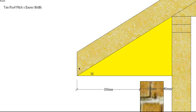because this is a brick veneer example we need to add 110mm for our brick and 40mm for our cavity. So that'll give us a total of 450mm for our eaves width.